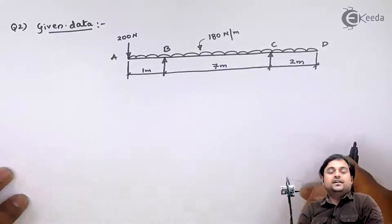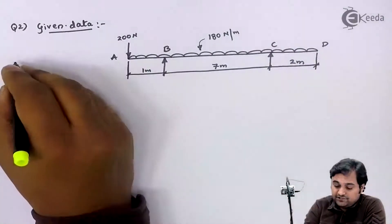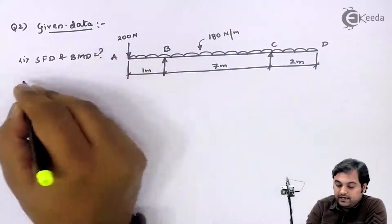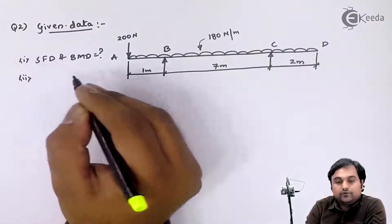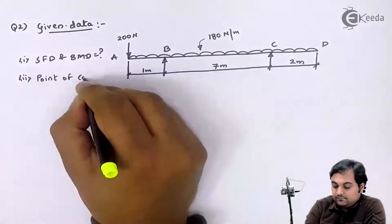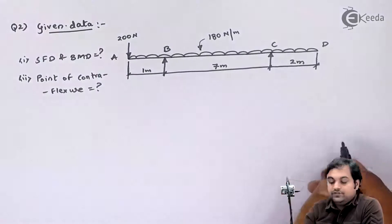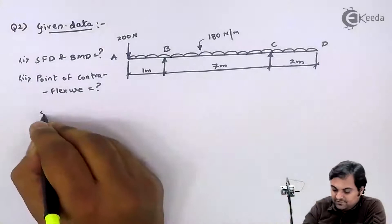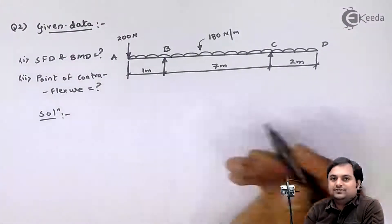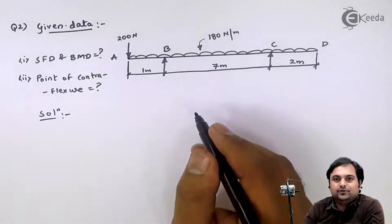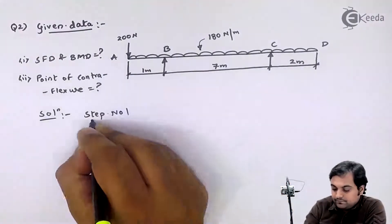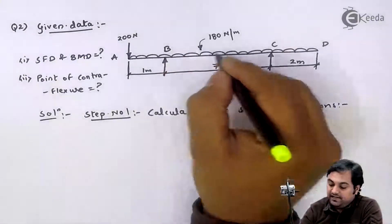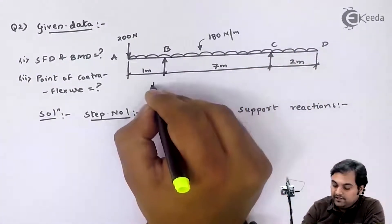This is the diagram of the beam which we have. The question is to draw SFD and BMD and locate the point of contraflexure if there is any. Let us try to get the solution. Step number one, as usual, will be the calculation of support reactions.